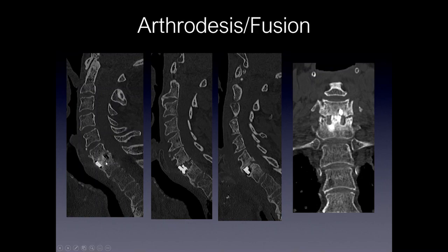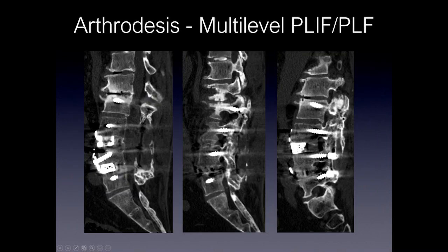Here's another example where on the sagittal you can clearly see bony bridging within the actual spacer. When you look lateral to the spacer, you don't see significant bony bridging, but centrally there's clear bony bridging — this would be considered fusion. Here's an example of multilevel posterior lumbar interbody fusion and posterior lumbar fusion. You can see continuity of bone across the disc space at these levels, and looking more laterally on the sagittal images you can see fusion along the facet joints as well.